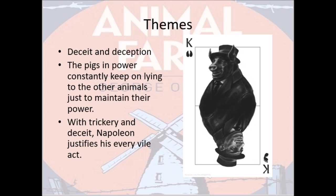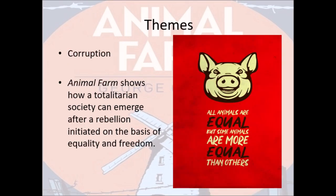Moving on to the next theme of deception: the pigs who control Animal Farm — basically Napoleon — constantly keep lying to the other animals just to maintain their unquestionable rule and power. This can best be explained through the way they modify the Seven Commandments just to suit their own purposes, using trickery and deceit to justify Napoleon's every questionable act.